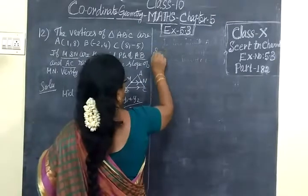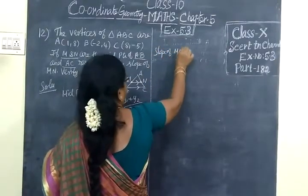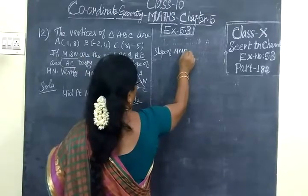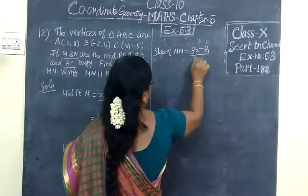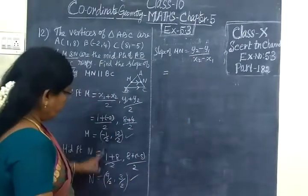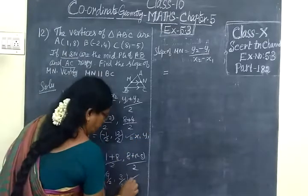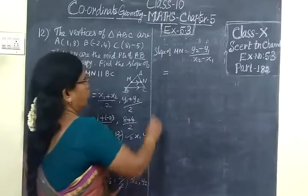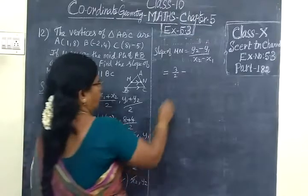Now we find the slope of MN. The slope formula is Y2 minus Y1 by X2 minus X1. So we have Y2 which is 3/2 minus Y1 which is 13/2, divided by X2 which is 9/2 minus X1 which is 0.